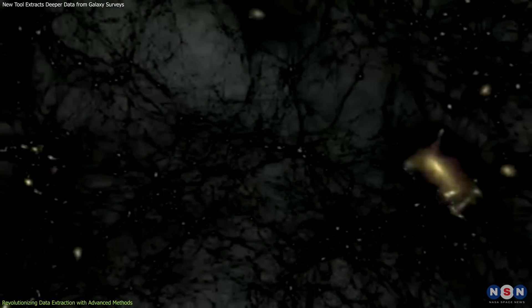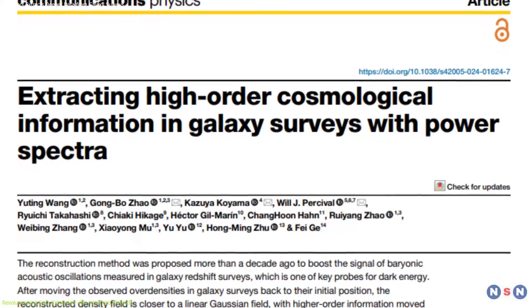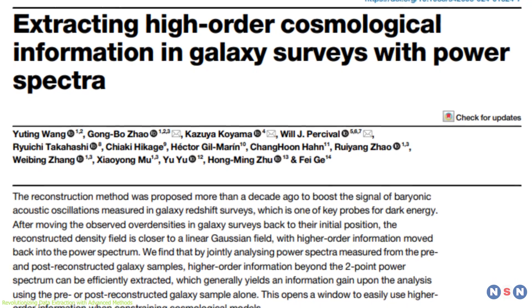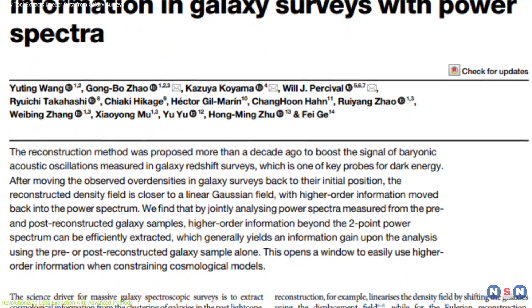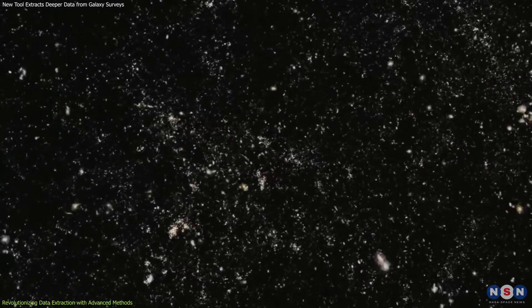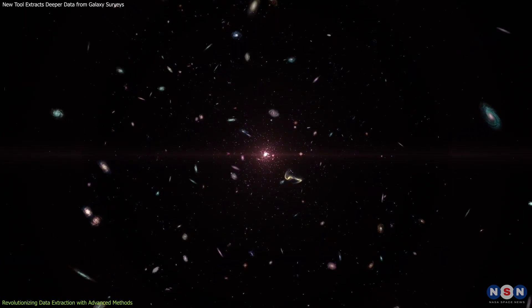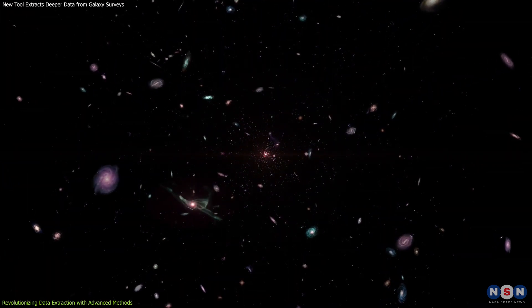The breakthrough method developed by NAOC scientists involves a sophisticated technique known as density reconstruction. This technique adjusts the observed positions of galaxies to account for the effects of gravity over time, refining the initial conditions of the universe's density field.